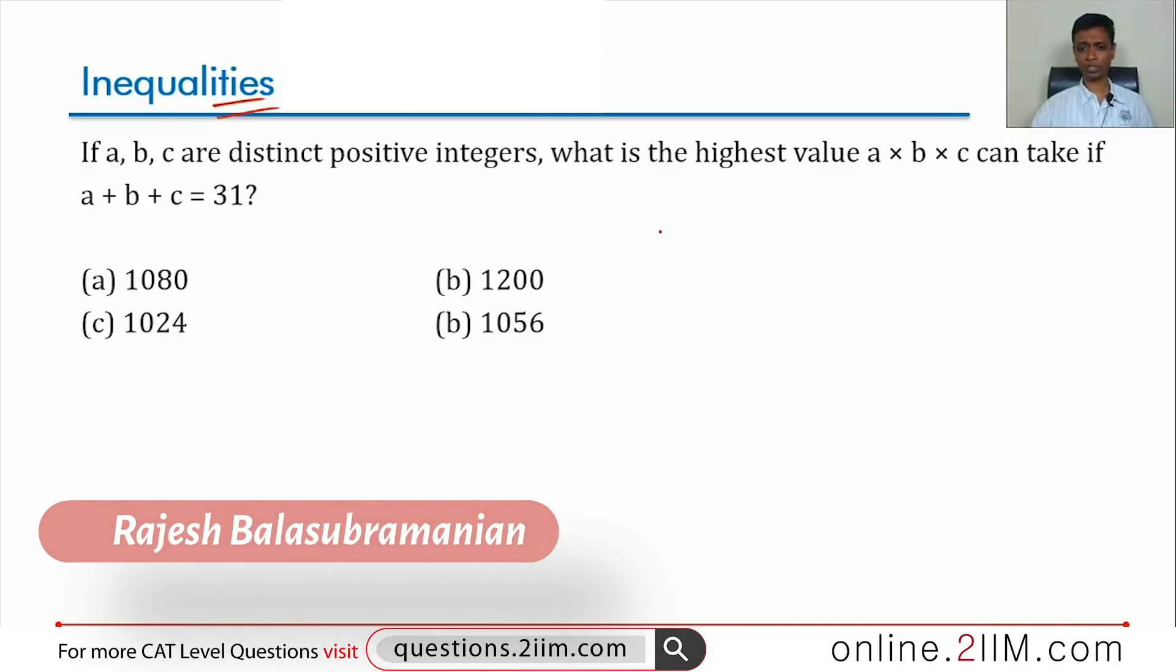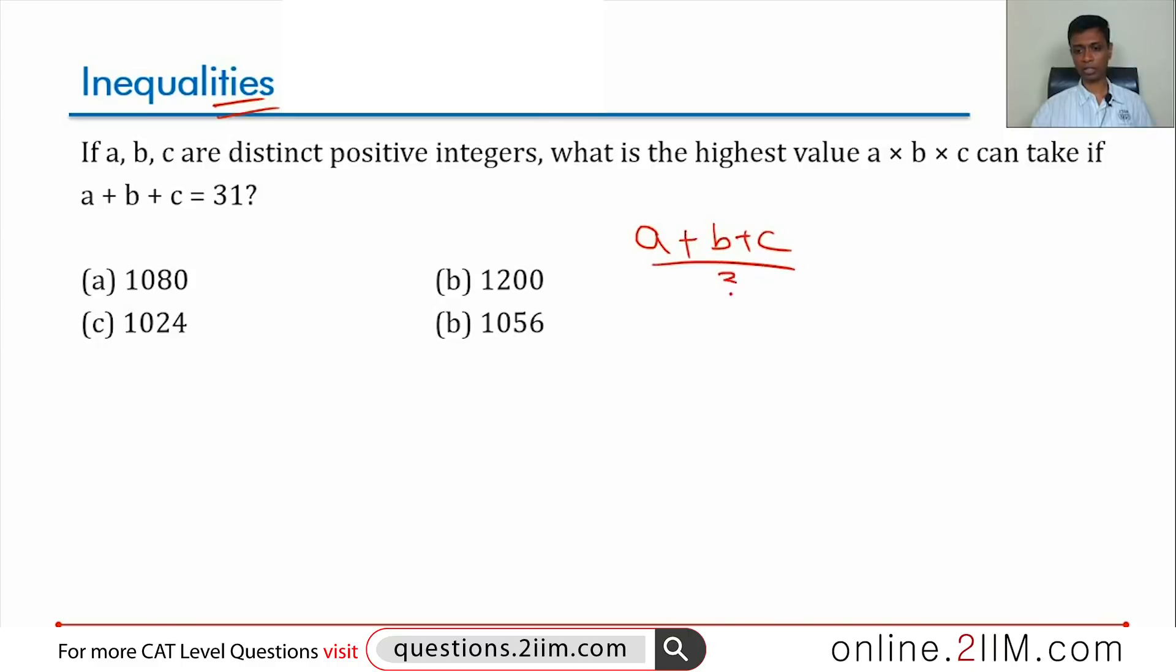To start with, we are going to start with a simple idea that A plus B plus C by 3 is the arithmetic mean, cube root of ABC is the geometric mean.